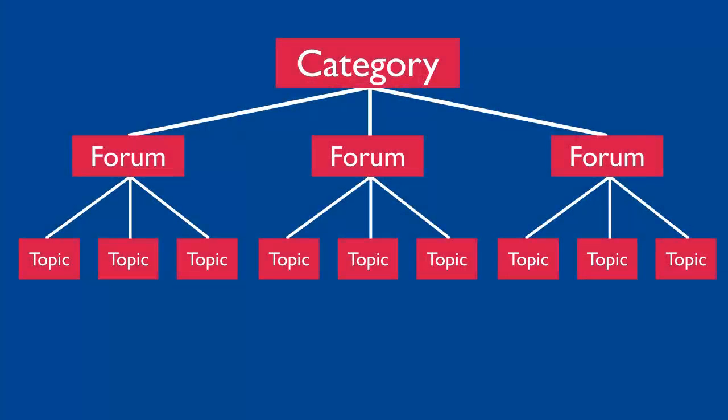The third level of organization of the DHS Program User Forum is called Topics. Under each forum, there are multiple topics. Topics are generated by users and can also be called threads.